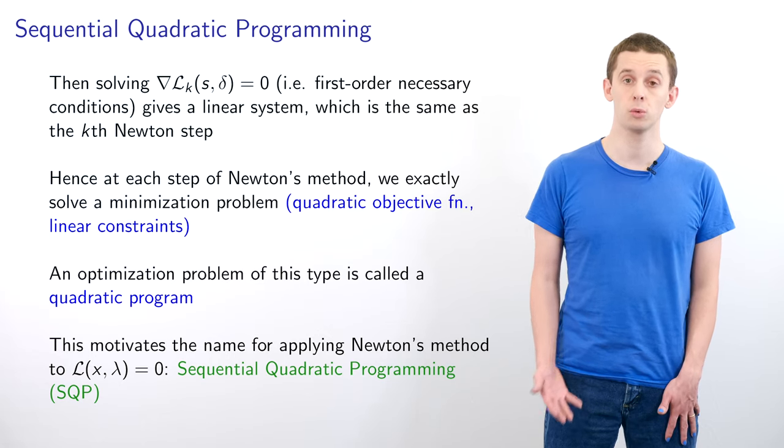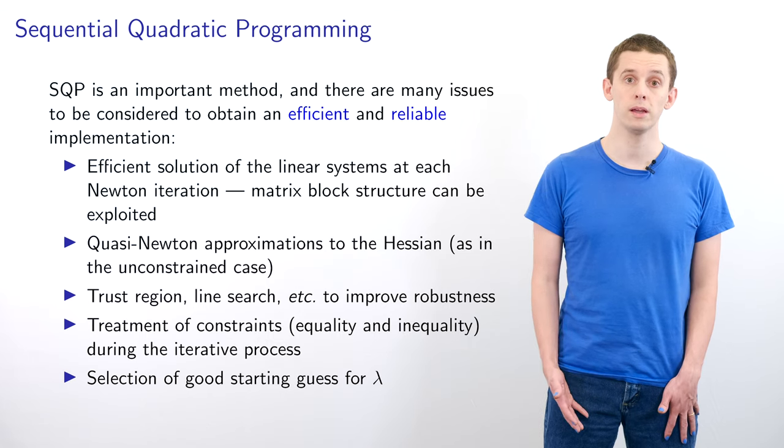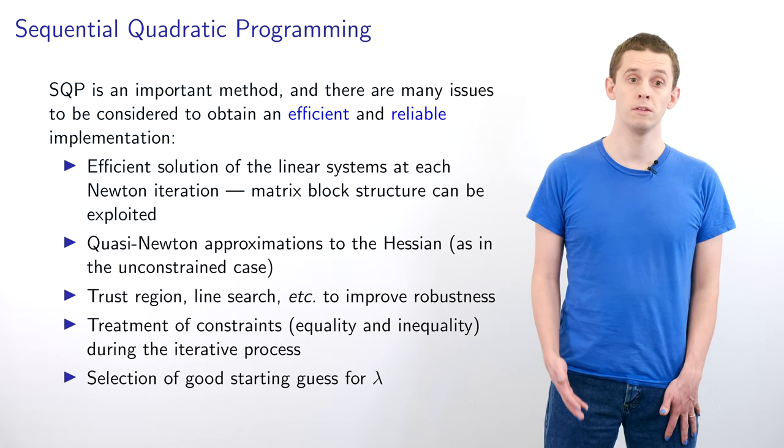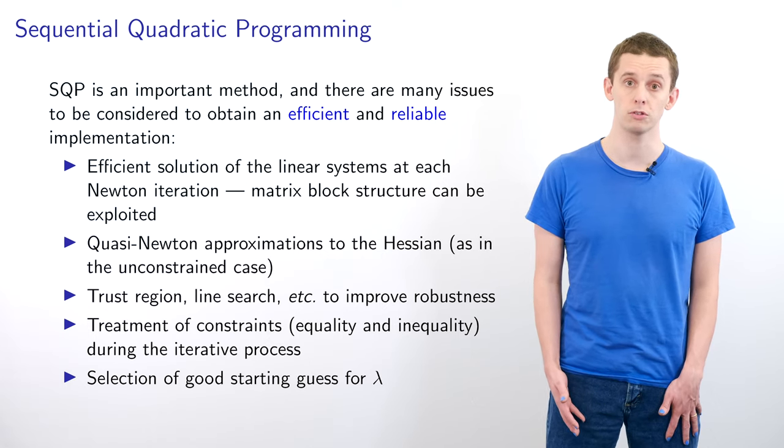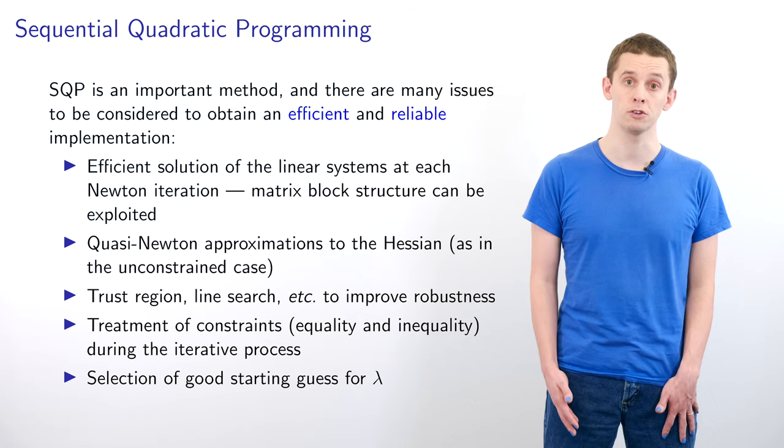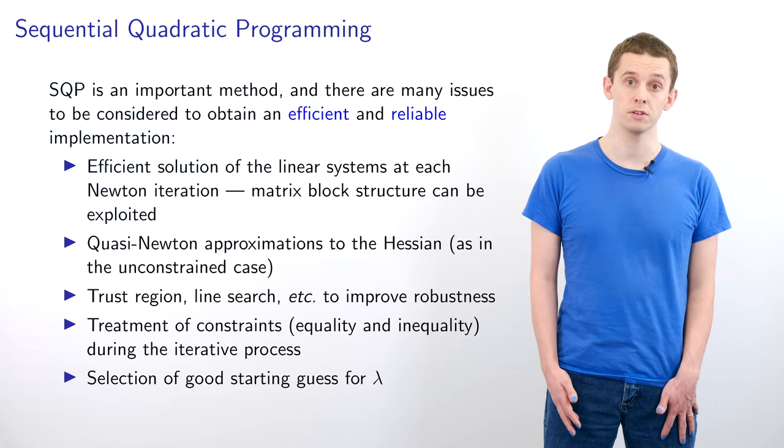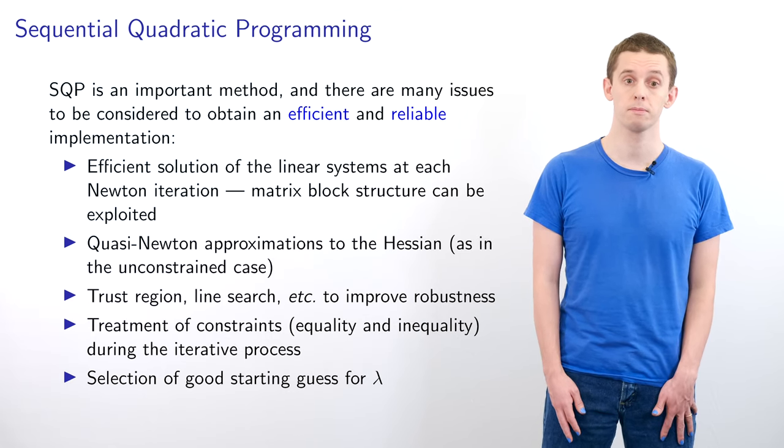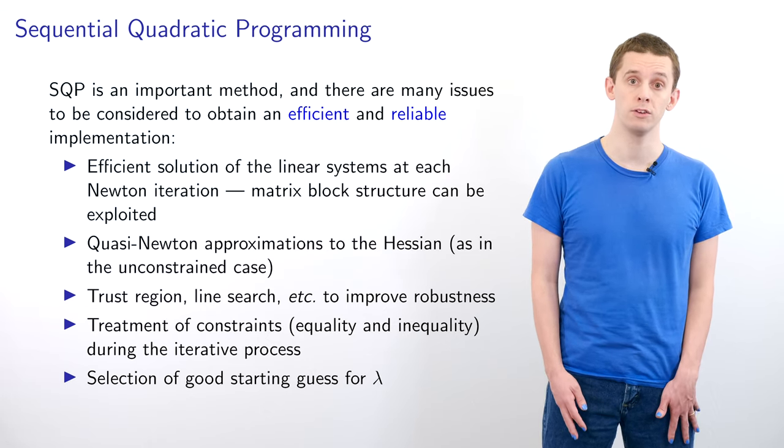SQP is an important method and there are many issues for us to consider. We could look at solving the linear systems in the Newton method efficiently, exploiting the 2×2 block structure. We might want to use quasi-Newton approximations to the Hessian just as we did for the unconstrained case. We could use trust region or line search approaches to improve robustness. We could look more carefully at the treatment of both equality and inequality constraints. We could also look at selecting good starting guesses for our Lagrange multipliers λ.